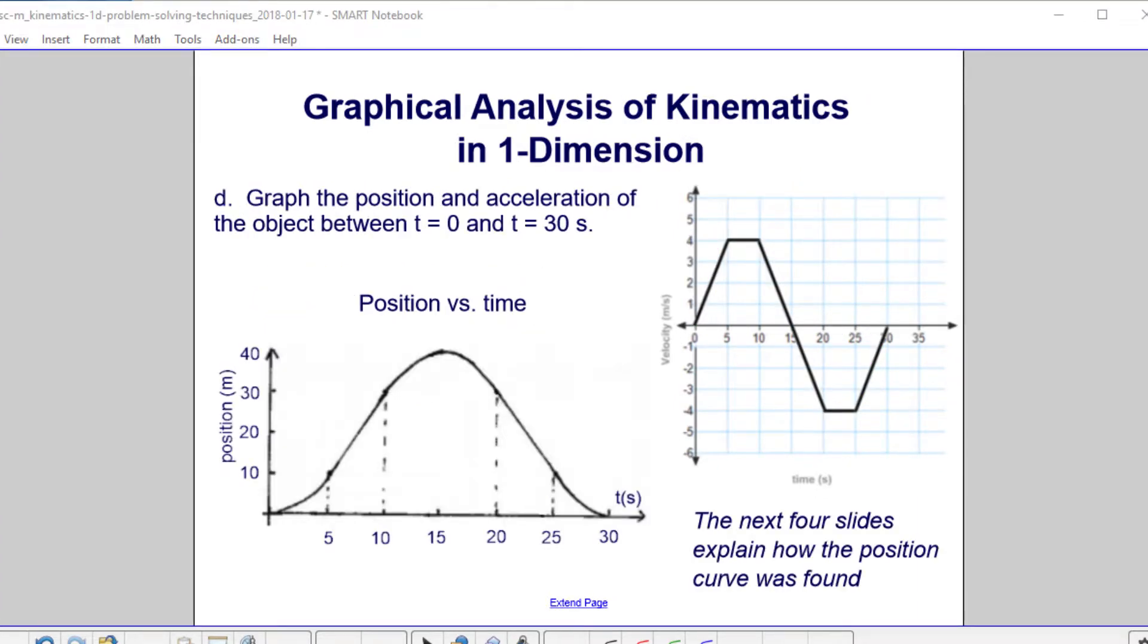Let's graph the position now and acceleration of the object. First, we're going to show the position graph over here. You can see that we started at zero, we went up to 40, then we came back and we wound up at zero again. But why was the curve shaped like this?